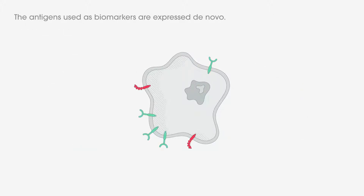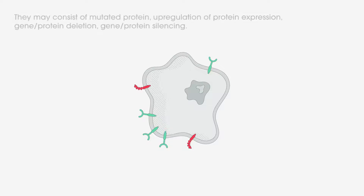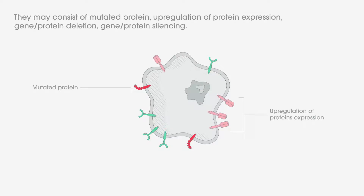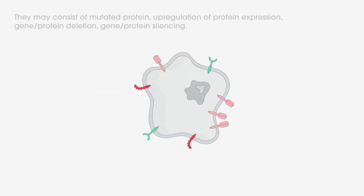The antigens used as biomarkers are expressed de novo. They may consist of mutated protein, upregulation of protein expression, gene protein deletion, or gene protein silencing.